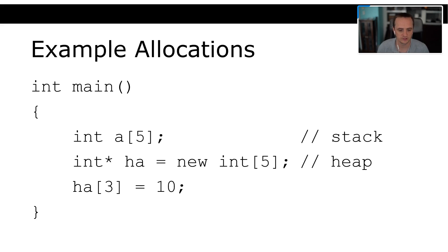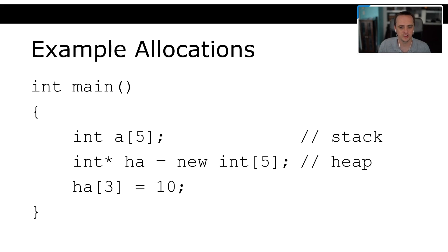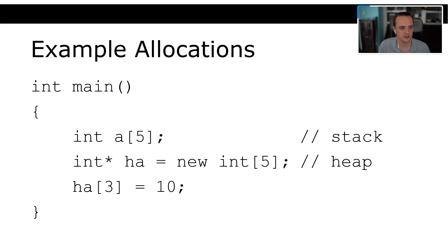The same applies to arrays. A static array like `int a[5]` — that's five entries at four bytes each, so all 20 bytes live on the stack. Versus a heap-allocated dynamic array in C++: `int* heapArray = new int[5]`. You can reference `heapArray` with an index like a normal array, but wherever you use the `new` keyword, that memory is on the heap.